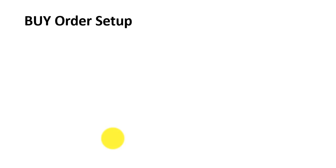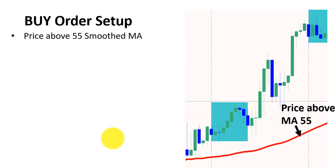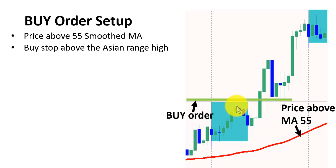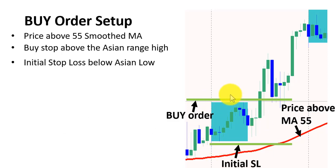For the buy order setup: you have a chart where prices are above the moving average — condition one. Secondly, you need to look for the high and the low of the session. The good news is that the indicator has drawn this session box for us, so you don't have to worry about how to draw the box. When you know the high of the range, you set a buy stop above the high. Because price is above the moving average, we are only looking to buy — not a sell stop order at all. You set your initial stop loss at the low of that range.